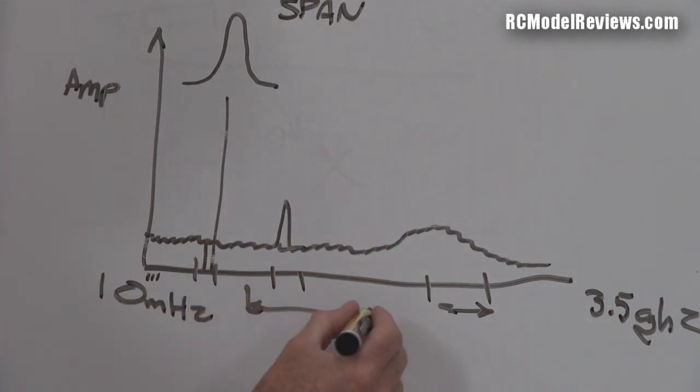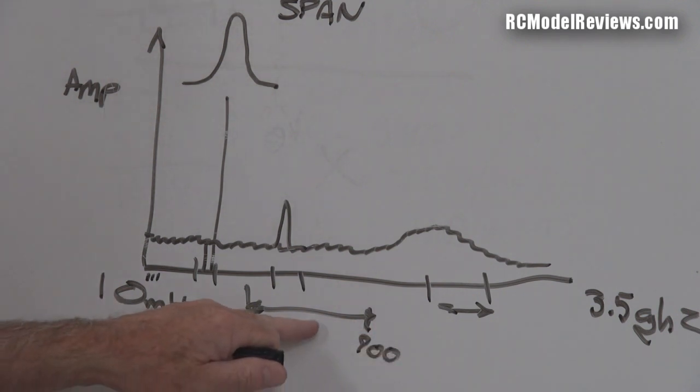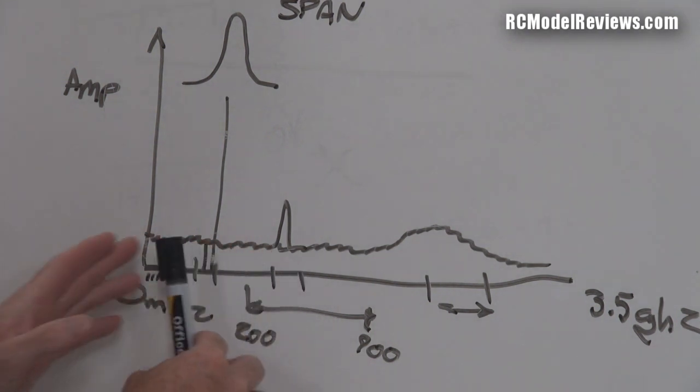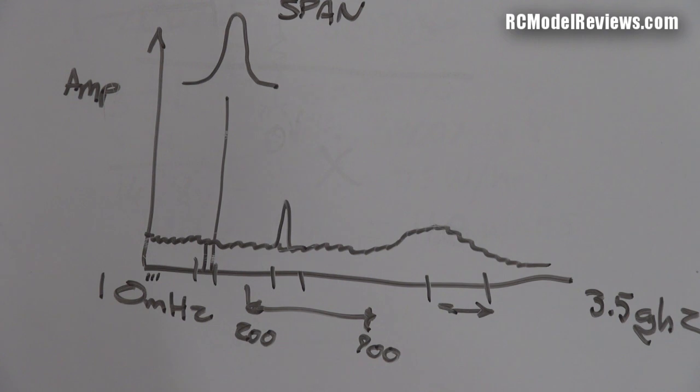One of the things we have on a spectrum analyzer is the span. The span is the piece of the band you're looking at—might be from there to there, might be from 200 megahertz to 900 megahertz. You can change the span from a very small piece of the band to the entire band depending on what you're looking for.